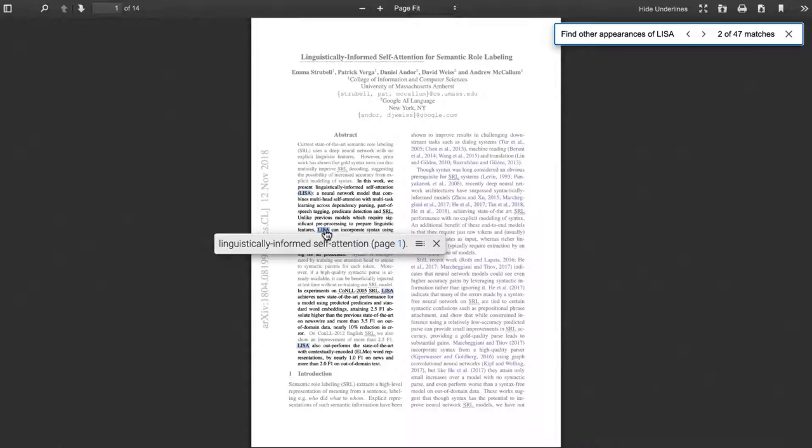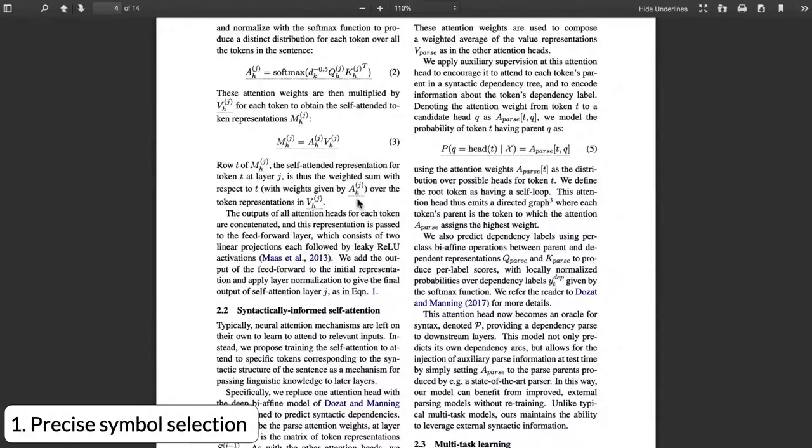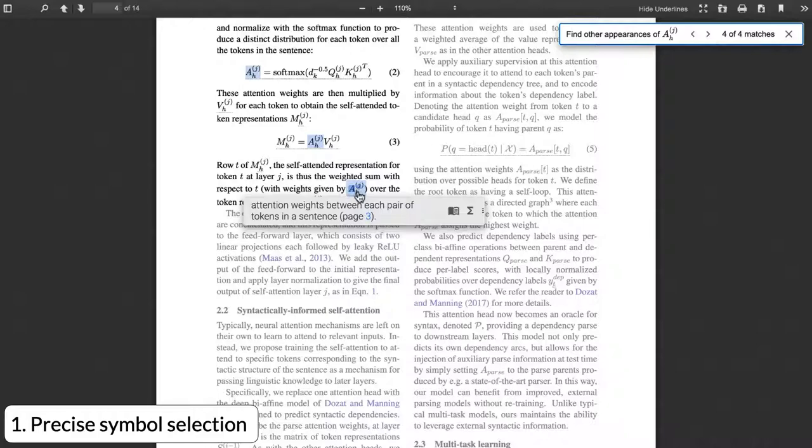Atop this basic interactivity, Scholarfy provides five unique interface components to augment the reading experience. First, it improves on standard affordances for selecting terms to better accommodate definitions of mathematical notation. Any symbol can be selected by just clicking on it. Any sub-symbol can be selected by clicking again.